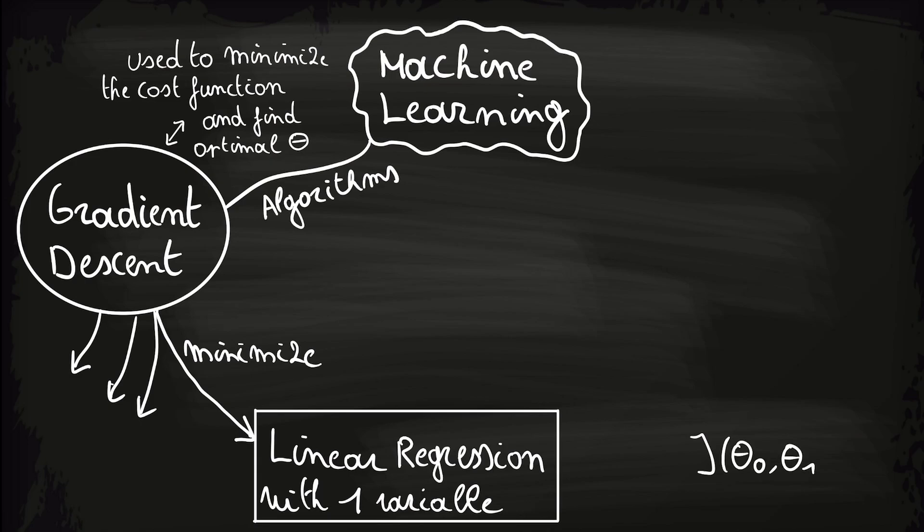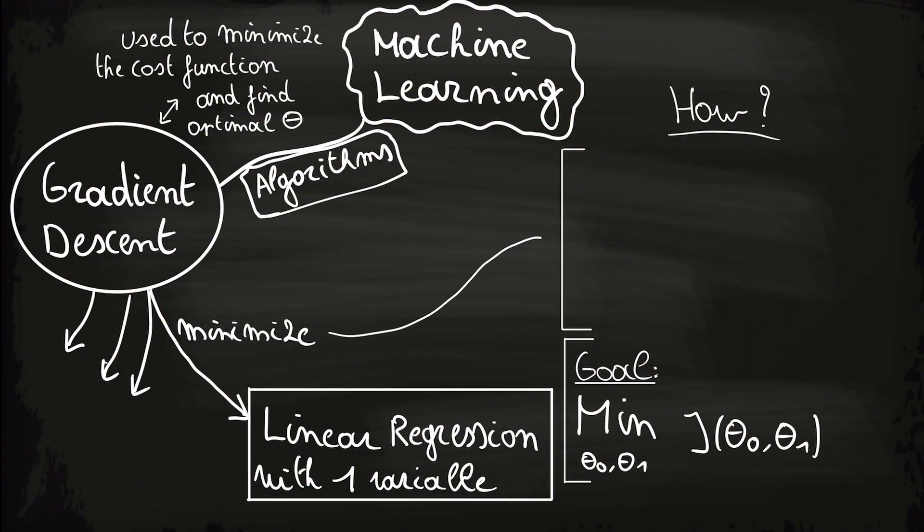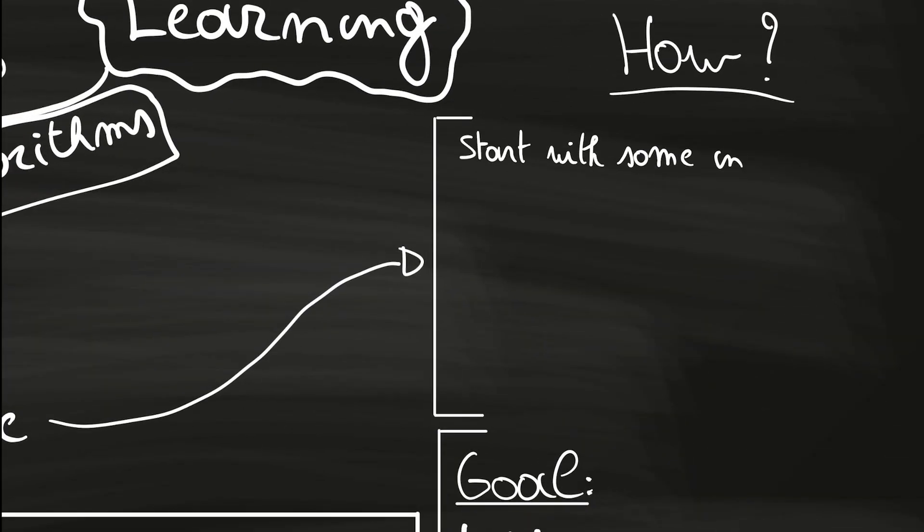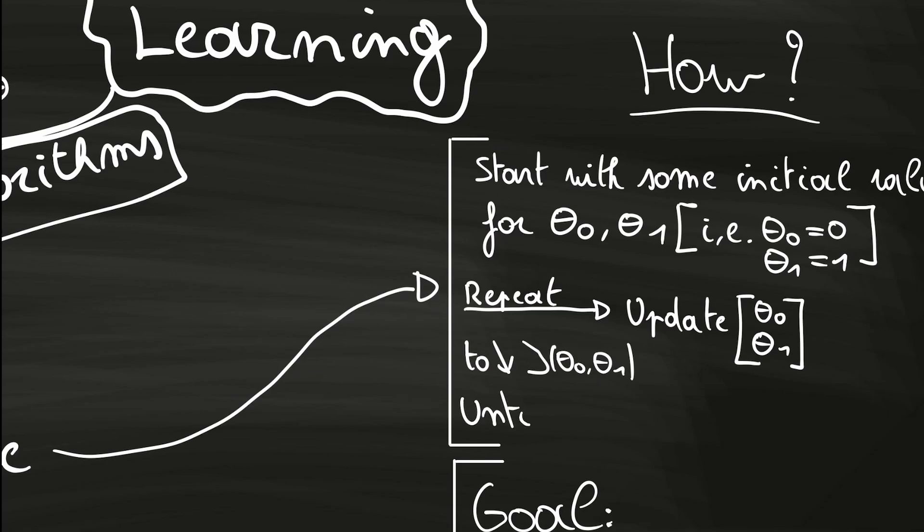But we will start with using gradient descent on the cost function we described in the last video. So to recap, our goal is to find the optimal values for theta 0 and theta 1 by minimizing the cost function. Last video, we ended the video by saying we need an algorithm to do this minimization process efficiently and that's what gradient descent is all about. In fact, this is done as follows. We start with some initial value for theta 0 and theta 1. For example, theta 0 and theta 1 both equal to 0. And then we update the values of theta so that the value of j goes down every step of the way. And we keep on doing this process until the value of j converged into a local minimum.